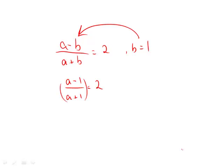Multiply both sides by a plus 1. Make sure to keep the parentheses there, it's important. We get a minus 1 is equal to 2a plus 2.